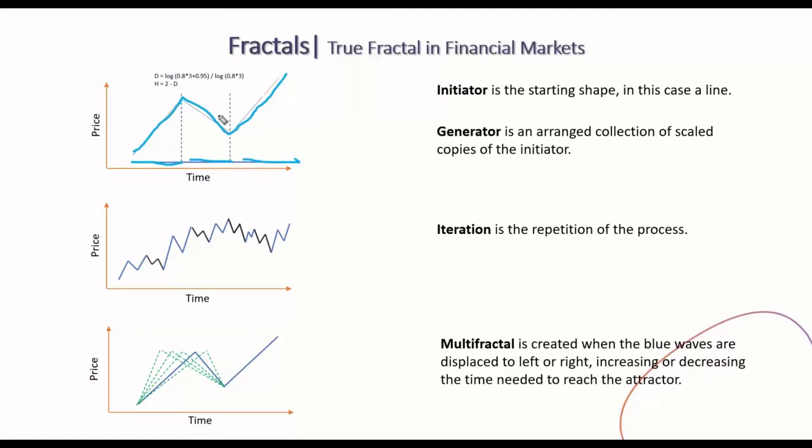If we measure—I measured in PowerPoint—it was showing 0.8 three times. In this case, we have 0.8 three times plus 0.95, which are the orange pieces. This will return you the fractal dimension, which was around 1.6 in this kind of structure we created. This is our generator.